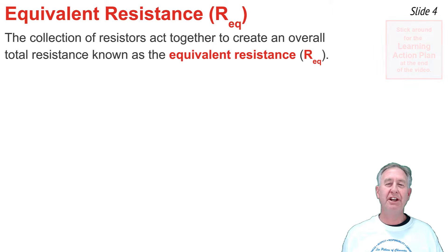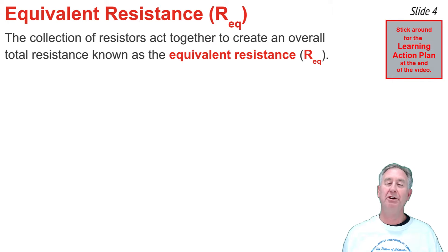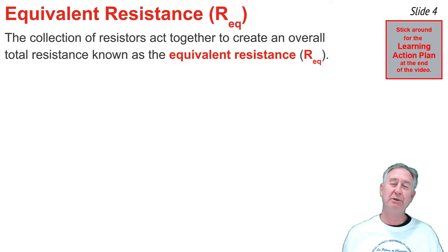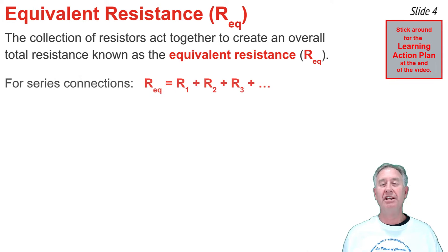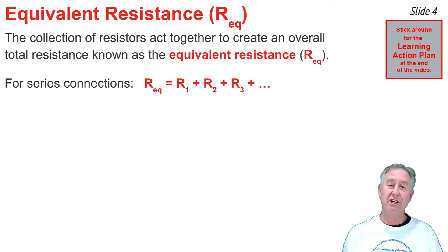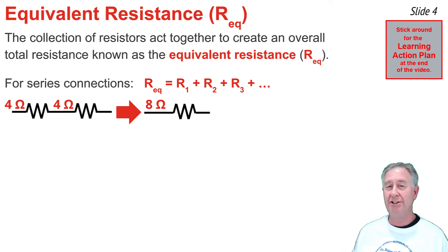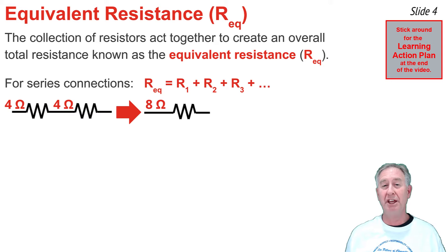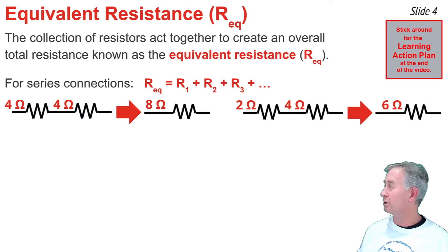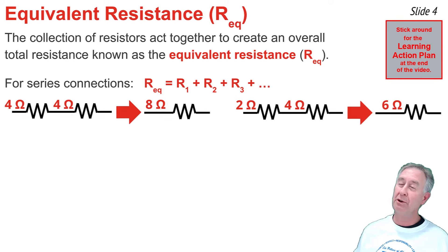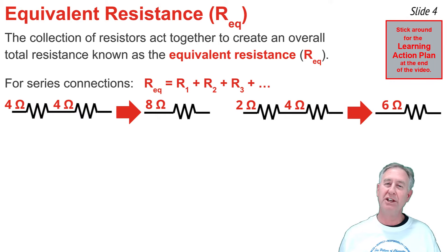The collection of resistors in a combination circuit act together to produce an overall total resistance, called the equivalent resistance, represented by the symbol R-EQ. For series connected resistors, finding the equivalent resistance is simply a matter of adding up all the resistance values. So 4 ohms and 4 ohms in series totals to 8 ohms, and 2 ohms plus 4 ohms in series totals to 6 ohms.